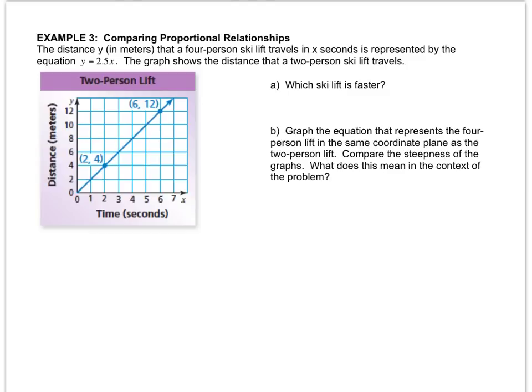Let's look at the next one. The distance y in meters that a four person ski lift travels in x seconds is represented by the equation 2.5x. The graph shows the distance that a two person ski lift travels. So this graph represents two person ski lift. They give me an equation for a four person ski lift but it's not graphed. Which ski lift is faster?